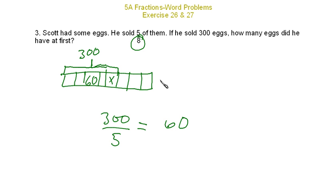And we want to know how many he had at first. What's the total? It's 60 eggs times 8, which is 480. He had 480 eggs at first.